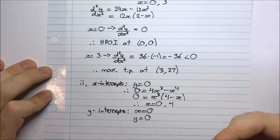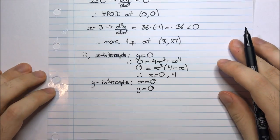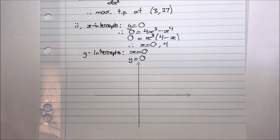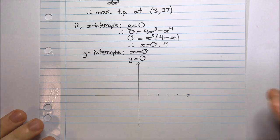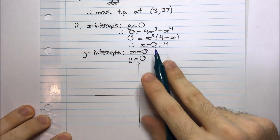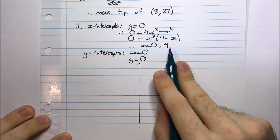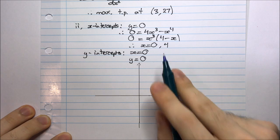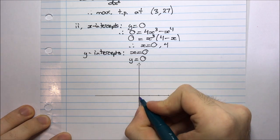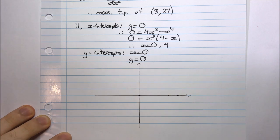Now, to put these together, we can graph the function. I've drawn a neat axis. I need to use the information I have to graph my function. It crosses the x-axis at x equal to 0 and x equal to 4. So x equal to 4 would be here, and of course the origin is here at x equal to 0.